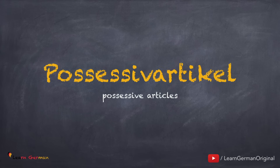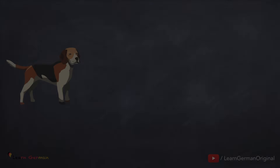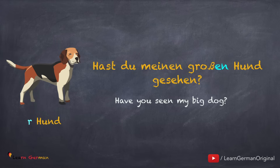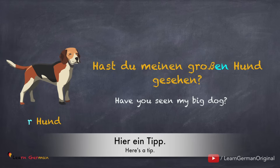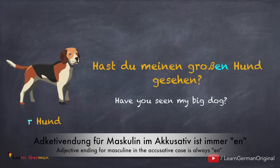Possessivartikel. Die Adjektivdeklination für Possessivartikel ist genauso wie bei den unbestimmten Artikeln. Hier sind die Beispiele. Maskulin: Hast du meinen großen Hund gesehen? In diesem Fall ist du Nominativ-Subjekt und meinen großen Hund ist Akkusativ-Objekt. Weil Hund maskulin ist, bekommt das Adjektiv die Endung -en. Tipp: Adjektivendung für Maskulin im Akkusativ ist immer -en.